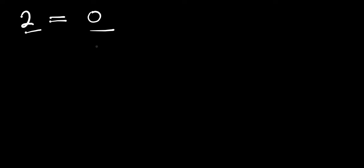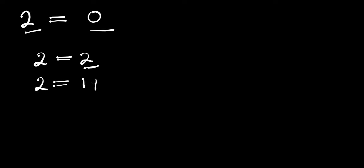Hello, in this video we are going to show how 2 equals zero. I want us to pay attention to all the details and find out where we actually got it wrong. Now 2 equals 2 — that is okay. We have 2 equals, and we can rewrite these two as 1 plus 1.